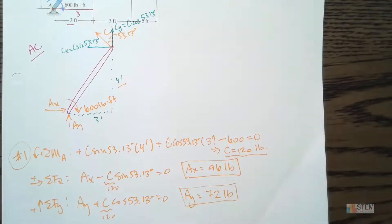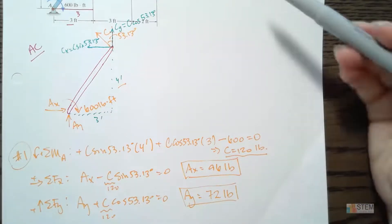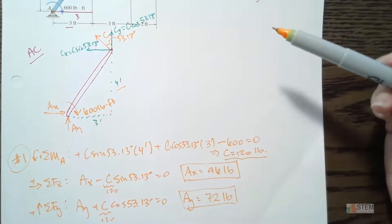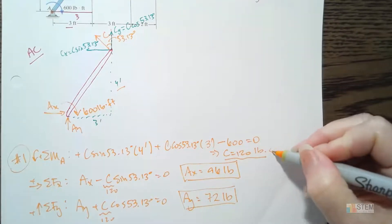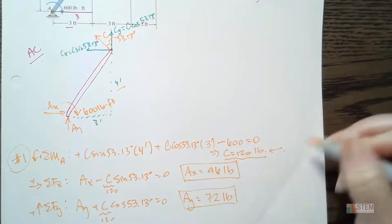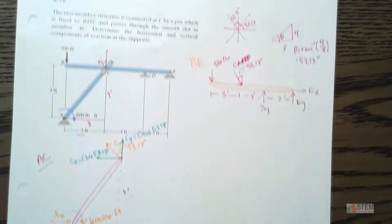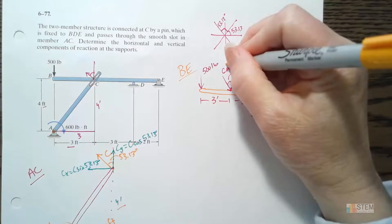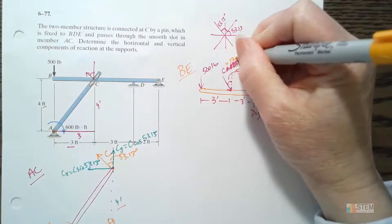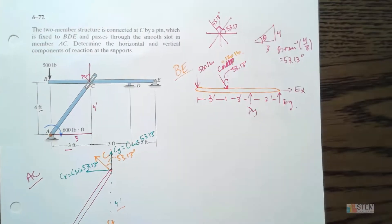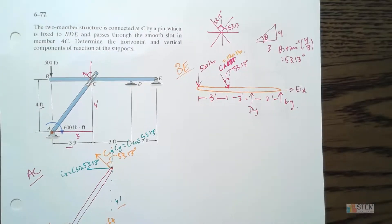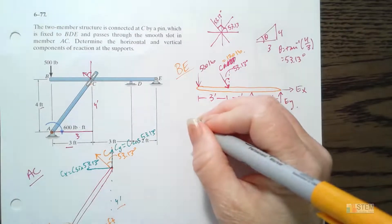Now let's move to our other diagram for member BE and use the C value of 120 pounds to solve for EX, EY, and DY.